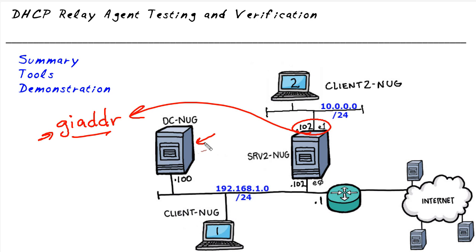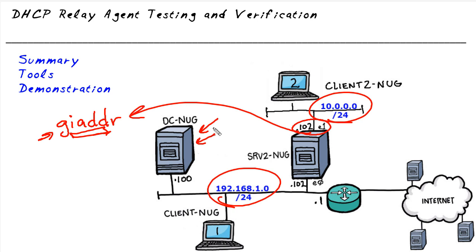At this point the DHCP server has two scopes: one for the 192 network and one for the 10 network. The DHCP server needs to offer an IP address from the correct scope. So the GIADDR field is going to have the relay agent's IP address — in this example, 10.0.0.102 — and that's the significant clue to the DHCP server regarding which scope to pull from, one that matches the network address portion of where that relay heard the message.